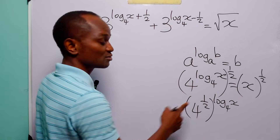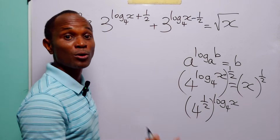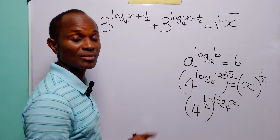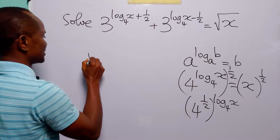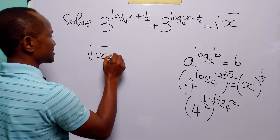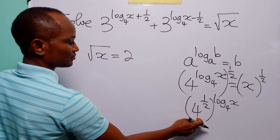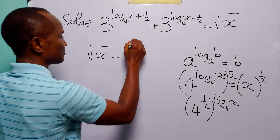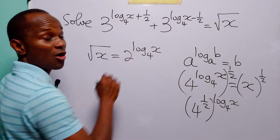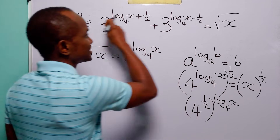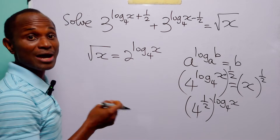Of course, 4 raised to the power half is the square root of 4, which is equal to 2. So we have that the square root of x is equal to 2 to the power log base 4 of x.